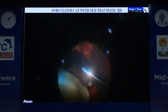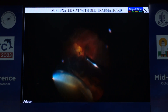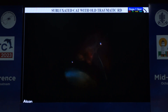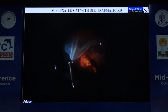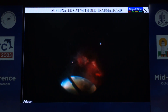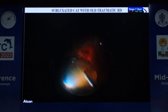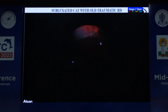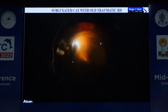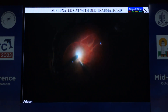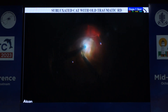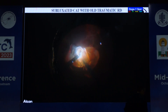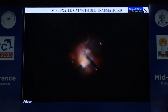This is a case of subluxated cataract with old traumatic retinal detachment. Before performing lensectomy using the vitrectomy cutter or fragmentome, make the lens free of all the vitreous so that you are not pulling or putting traction over the vitreous. After you have freed the lens from the vitreous, use the fragmentome to perform the lensectomy, then proceed with the remaining standard steps.